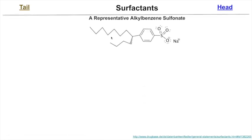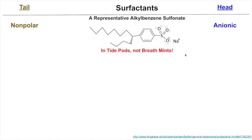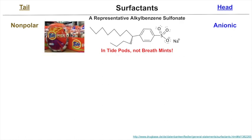Lauryl glucoside is made from cornstarch (the glucose portion) and hydrocarbon chains from coconut fat — you can reduce the triglycerides in coconut fat to get the alcohols. Alkyl benzene sulfonate has a branched non-polar tail and is anionic (deprotonated sulfonic acid). It's made by adding the alkyl chain first (ortho/para director), then sulfonating, then deprotonating. This surfactant is in Tide pods — not breath mints. Kids were eating Tide pods, so manufacturers added a bitter ingredient and opaque packaging.